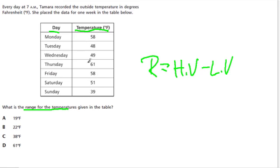So let's find our highest value. I think the highest value here is 61. I don't see anything else in the 60s or higher, so that's going to be my highest value. And the lowest value, I think, is this, because on Sunday it was 39 degrees, and there's no other number here in the 30s or lower.